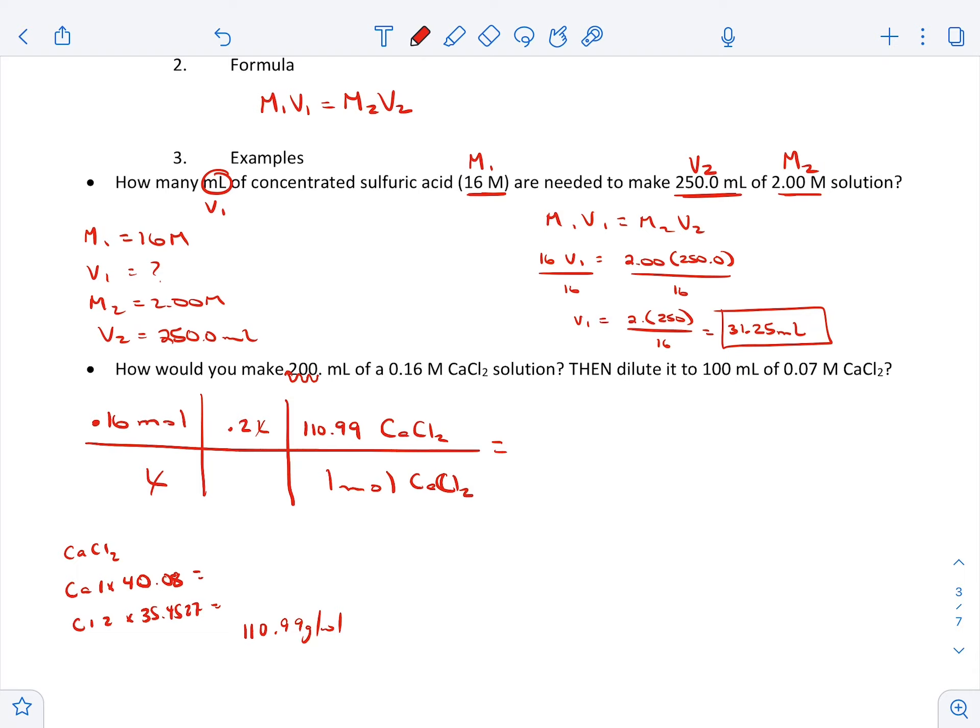All right, so that means I need to add 3.55 grams of CaCl2 to make my solution. I would measure out on a balance 3.55 grams of CaCl2, then put it in the bottom of my volumetric flask or my flask or whatever and fill it up to 200 mil, shake it up, dissolve it. Hey, we're there.